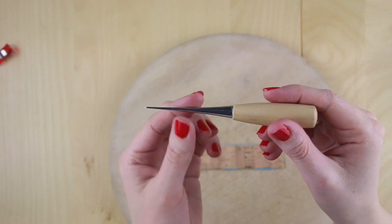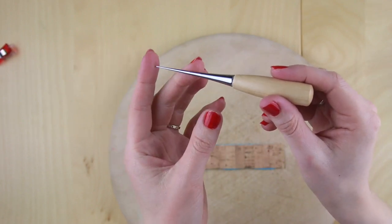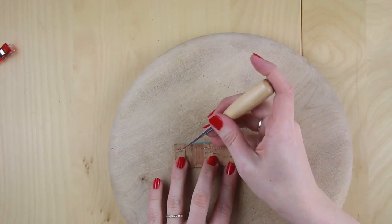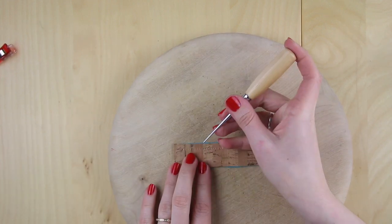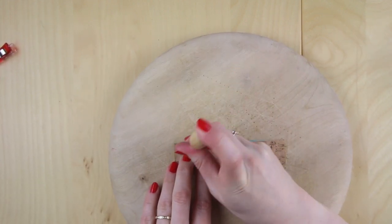Now with your awl and if you have one of our kits it will be a slightly different awl but they do the same thing you're going to puncture every second hole. Now you can go on every single hole but I went for every second one because it looked a bit better with linen thread.